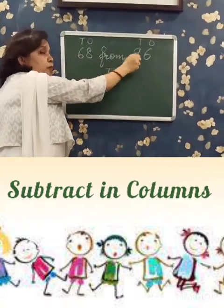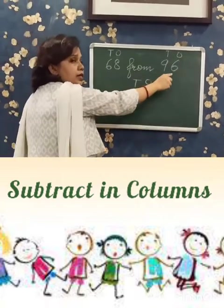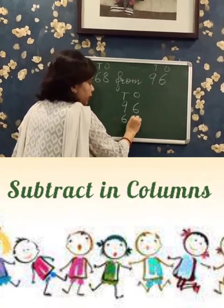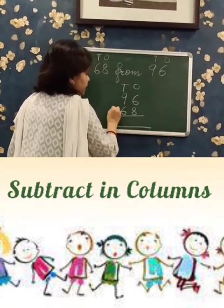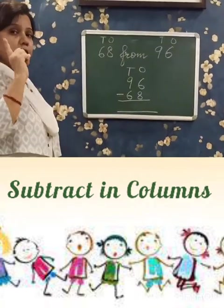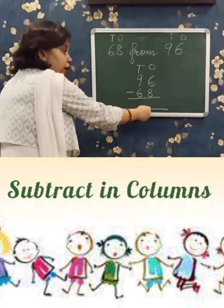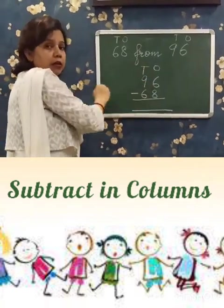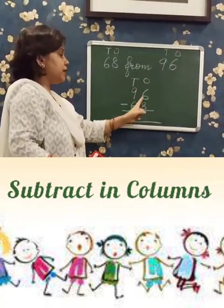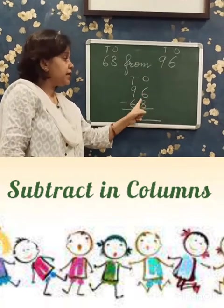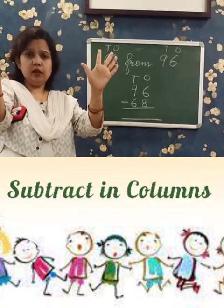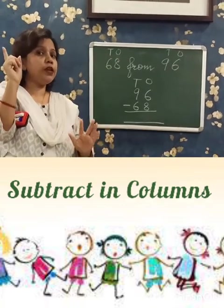68 from 96. The bigger number is 96, so first we write 96. Below that we write 68. Now arrange in columns vertically. 1's: 6 minus 8 — from 6, can we take away 8? No. So we have to borrow.